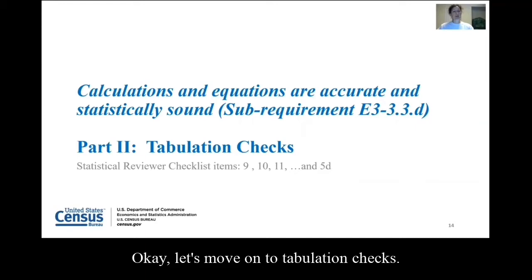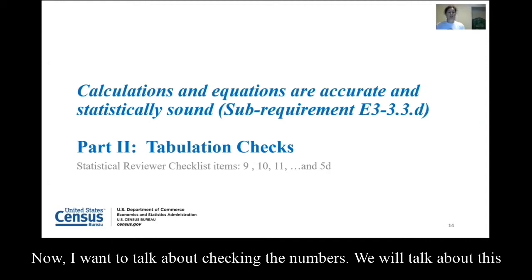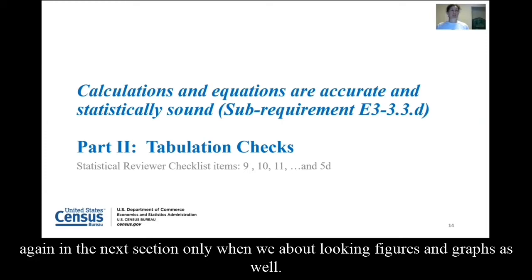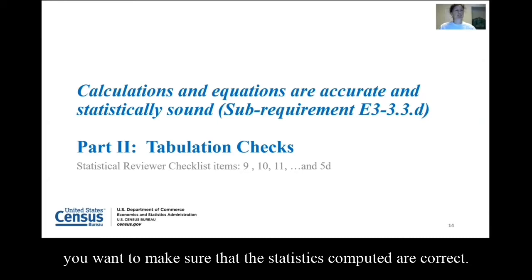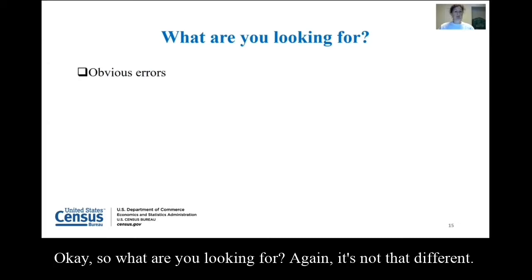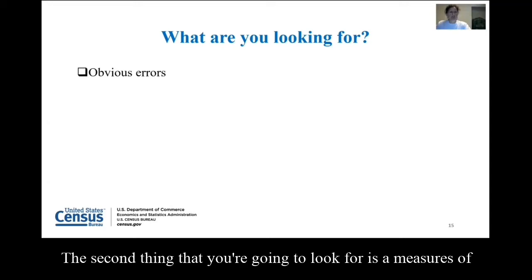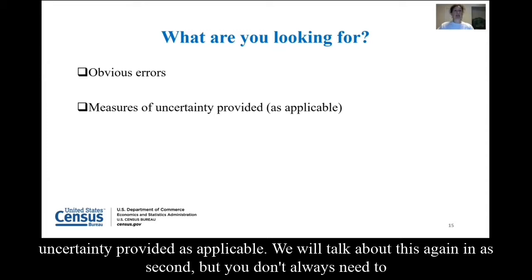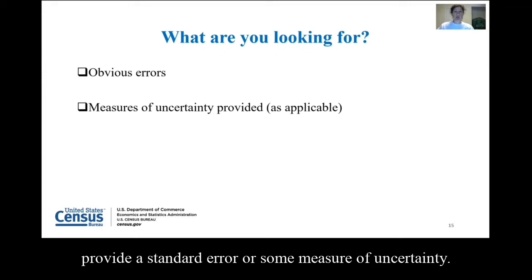Let's move on to tabulation checks. We've talked about calculations and checking the equations. Now I want to talk about checking the numbers. Obviously, in a figure, graph, or table, you want to make sure that the statistics computed are correct. So what are you looking for? First, you're going to look for obvious errors. Second, you're going to look for whether measures of uncertainty are provided as applicable — you don't always need to provide a standard error or some measure of uncertainty.